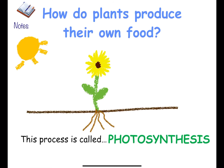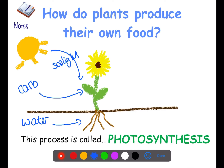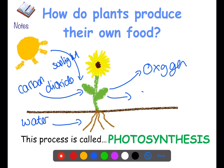So how do plants produce their own food? The process by which plants produce their own food is called photosynthesis. Plants need to take in water through their roots, and through their leaves they take in sunlight and carbon dioxide from the air. They then give out oxygen from the leaves and also produce sugars which they use as their own food.